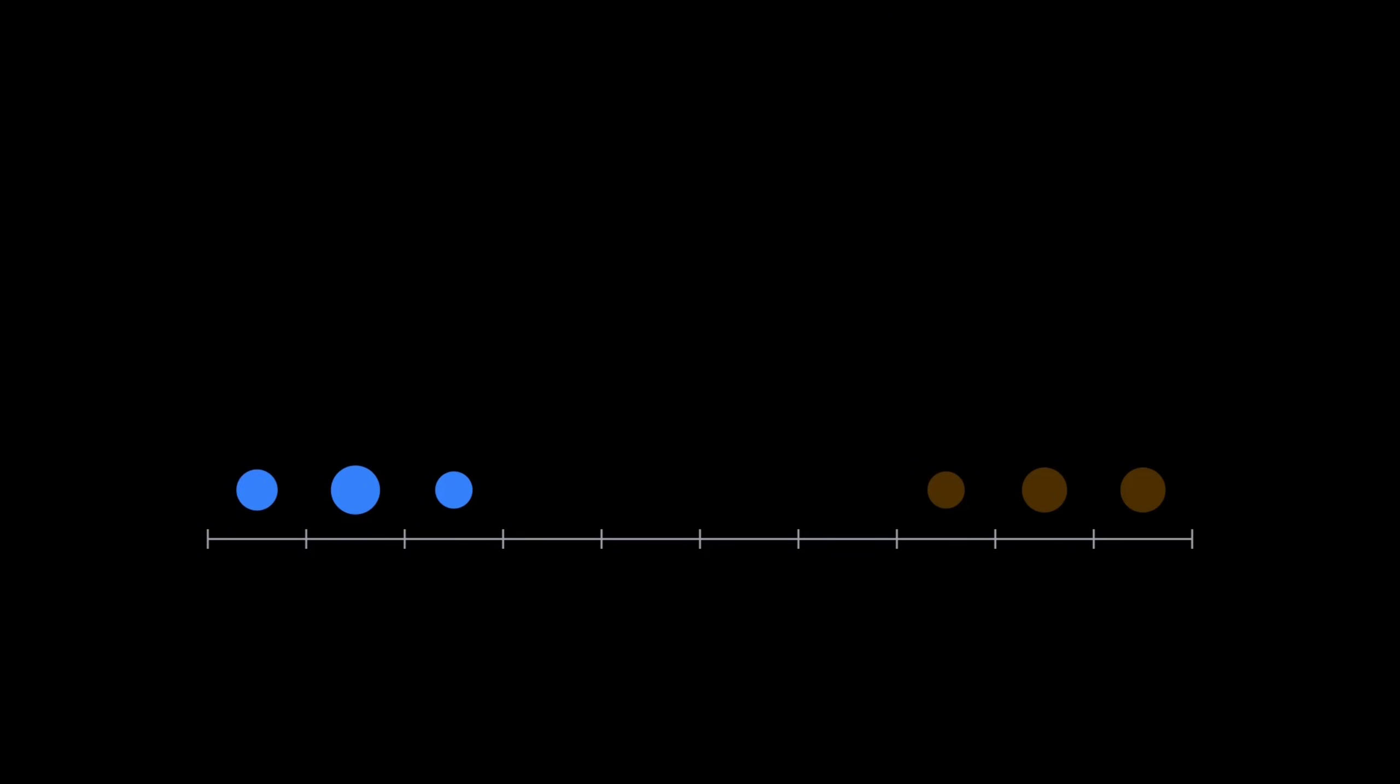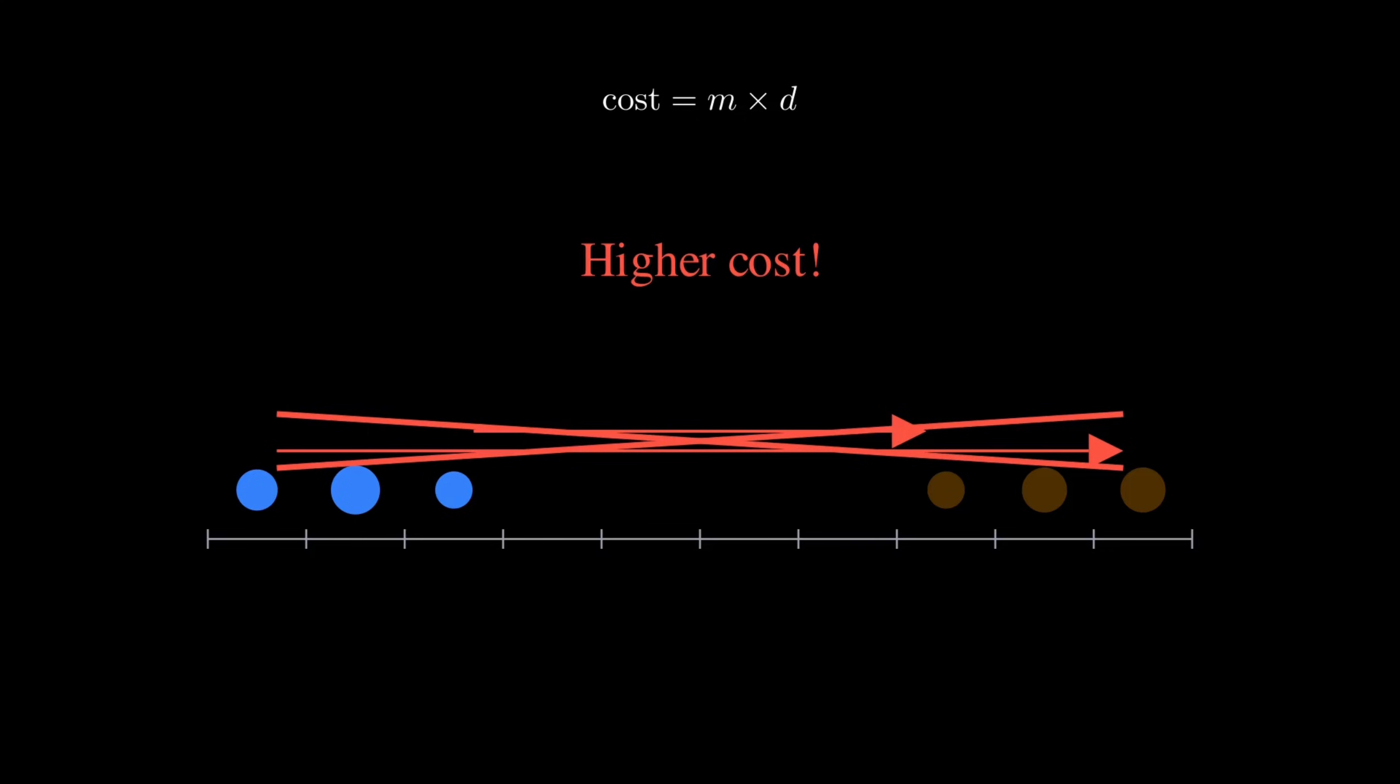The cost of moving dirt, it's simple, mass times distance. The Wasserstein distance finds the transport plan that minimizes total cost. The key insight, move nearby mass to nearby locations. Only transport far when you absolutely must.